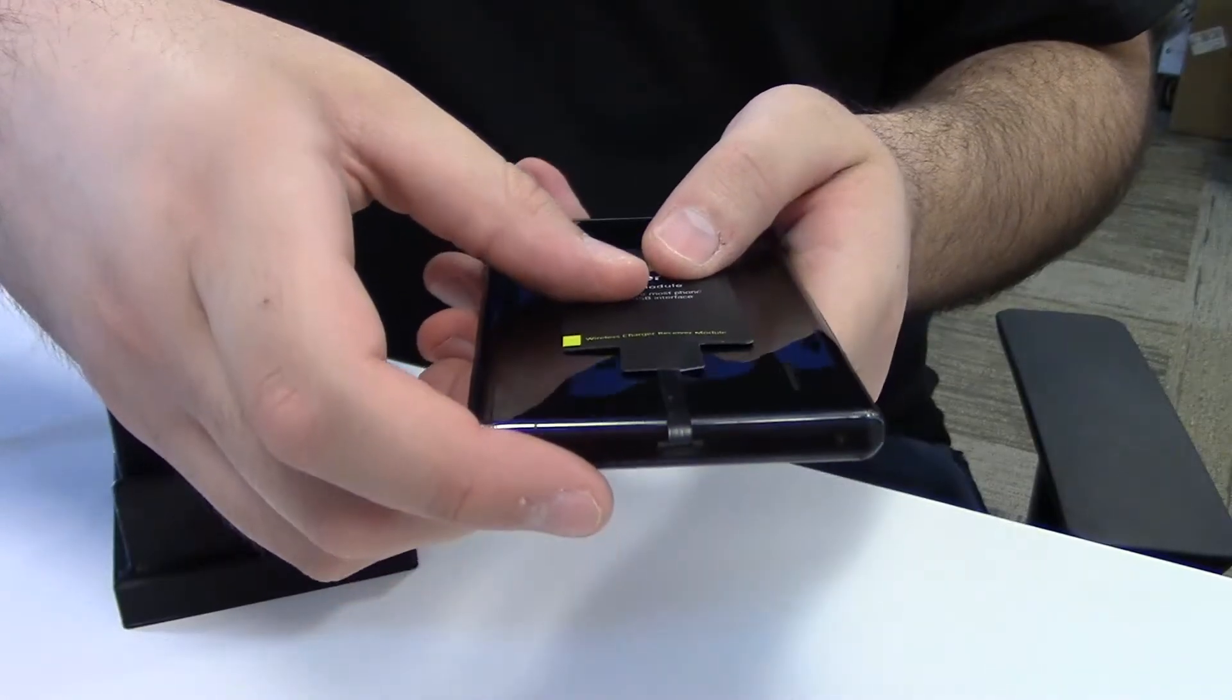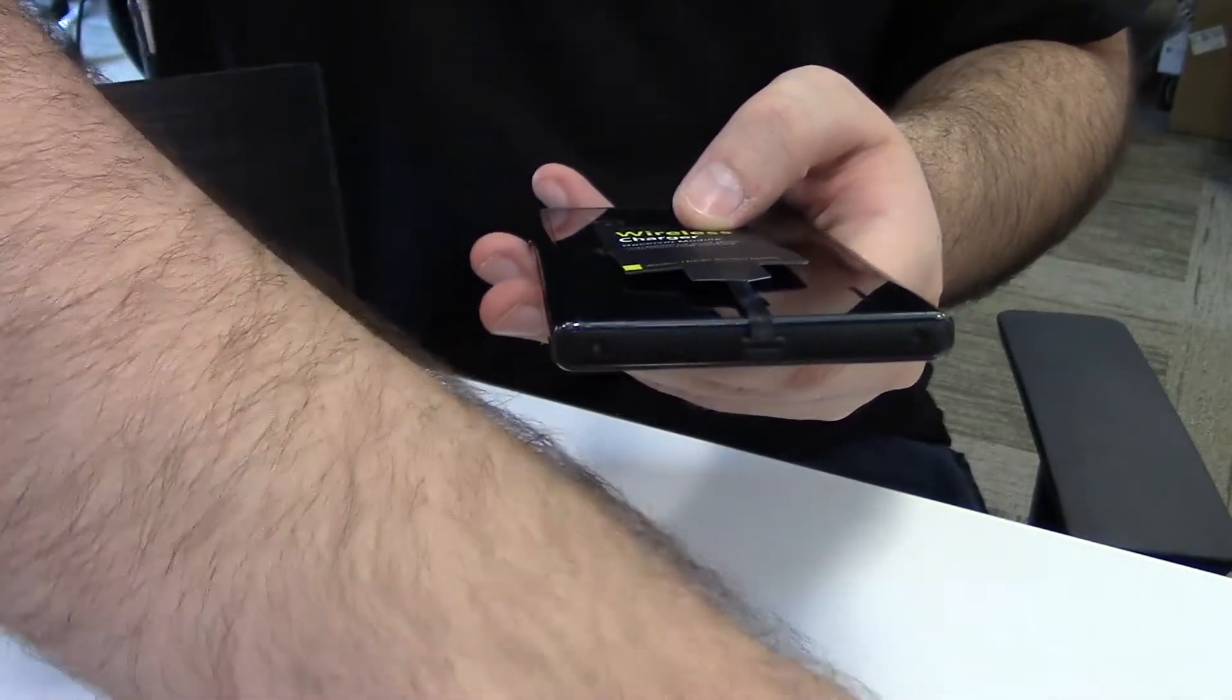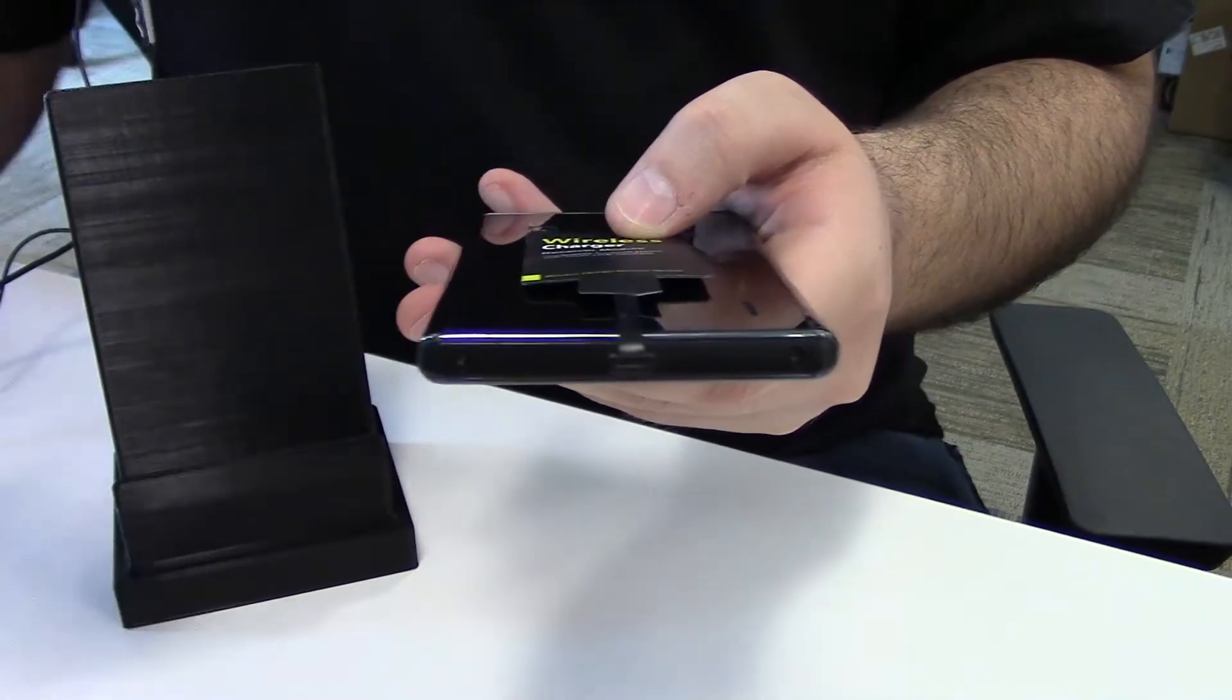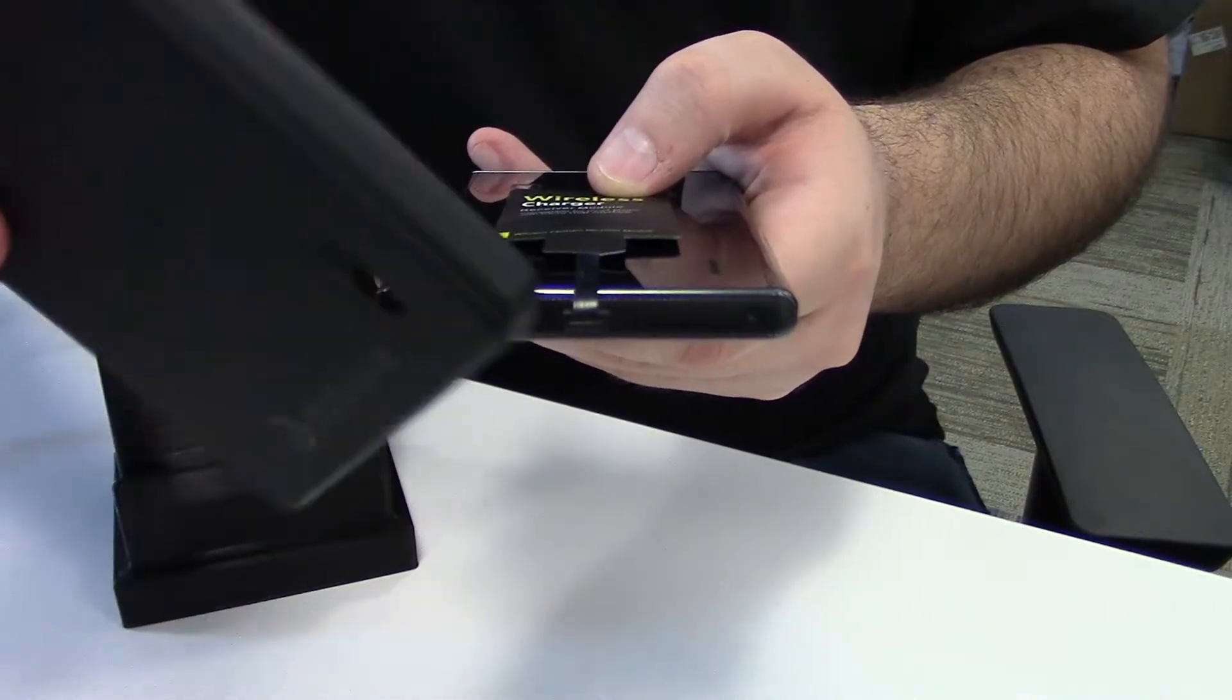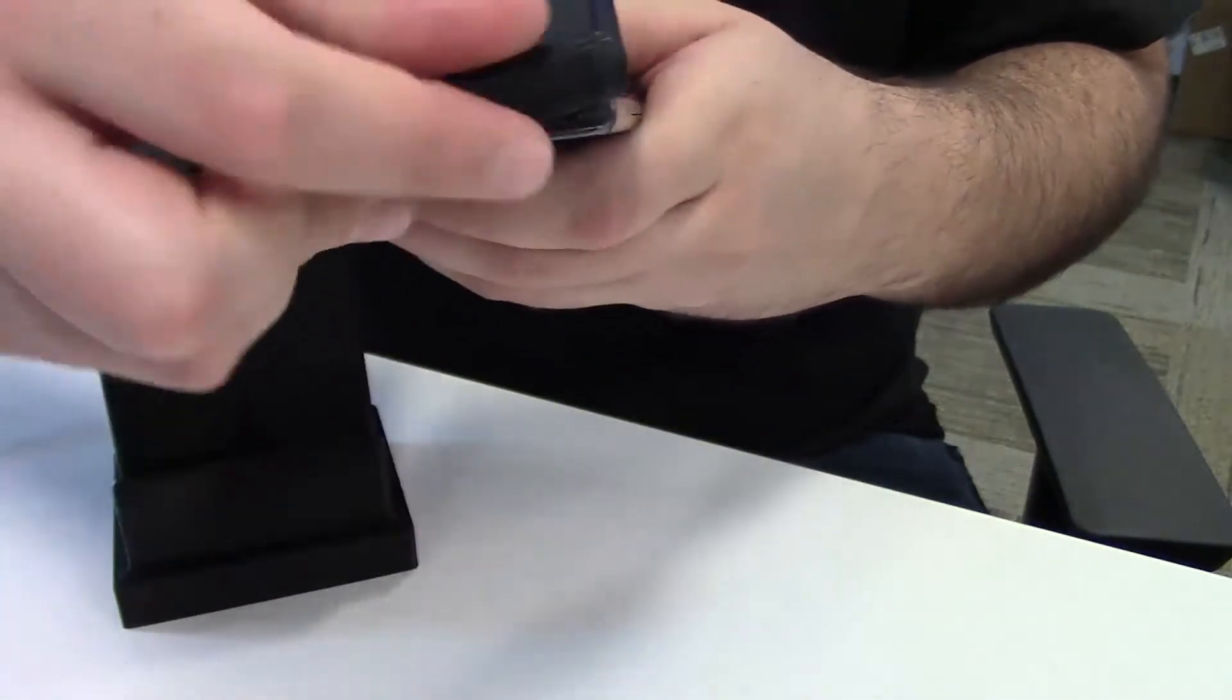The receiver connects to my phone via a super thin cable and the coil rests on the back of the device. Since I don't want to attach the receiver to the back of my phone with the included adhesive, putting it in my case should help keep it in place.